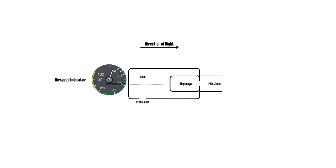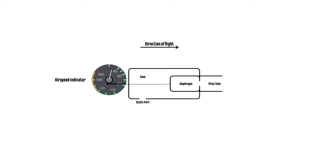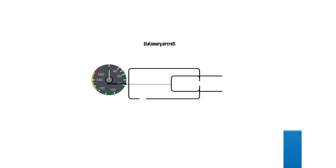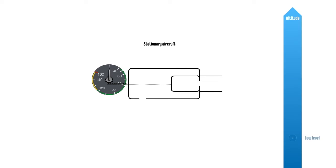A mechanical link between the diaphragm and the pointer drives the needle to display indicated airspeed to the pilot. In the atmosphere, density and static pressure decrease as altitude increases.